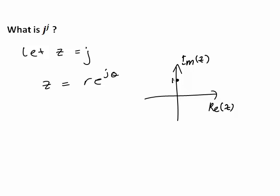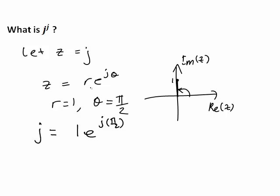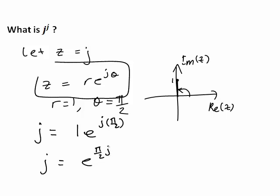So the number j would be 1 unit up the vertical axis. r is the distance of this number from the origin, which is just 1. Theta is the angle made anti-clockwise with the positive x-axis, and here that angle is 90 degrees. In exponential polar form we must always write theta in radians, so theta equals pi divided by 2. Hence j equals e to the j times pi on 2.